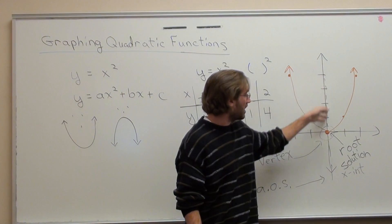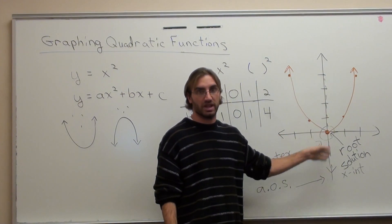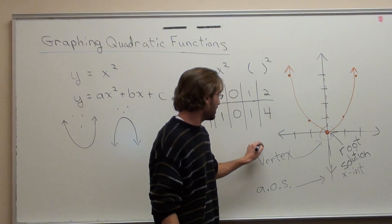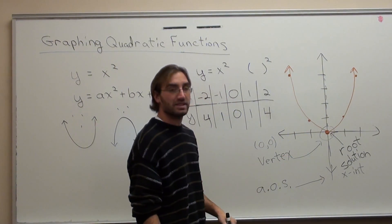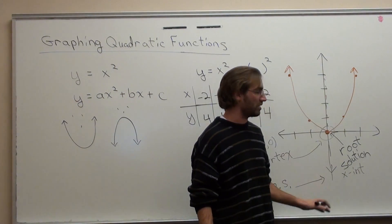So the axis of symmetry is where you cut it in half. But the funny thing is, the axis of symmetry and the vertex are always the same thing. So the axis of symmetry, I'm sorry, the vertex is at 0, 0 on this particular graph. And the axis of symmetry is at x equals 0. The line x equals 0.